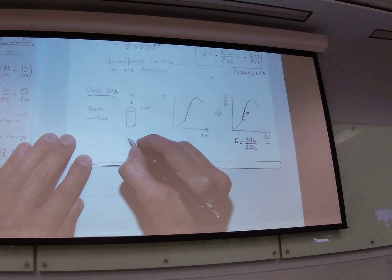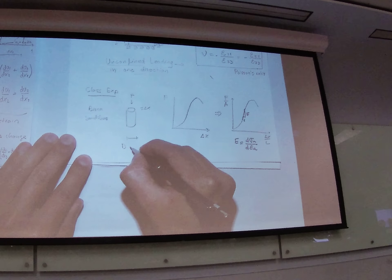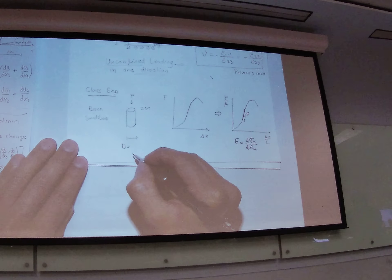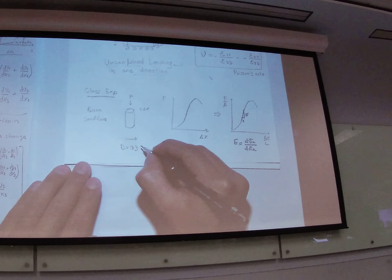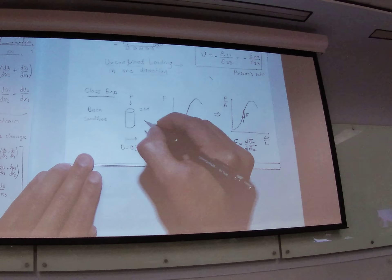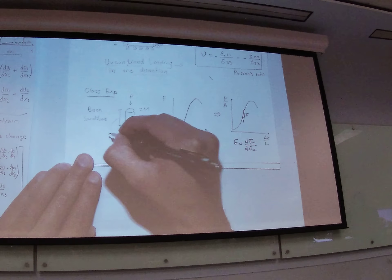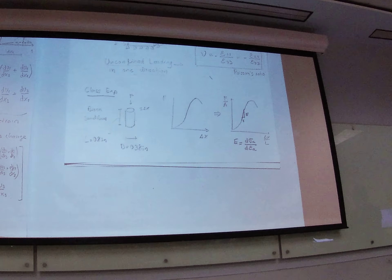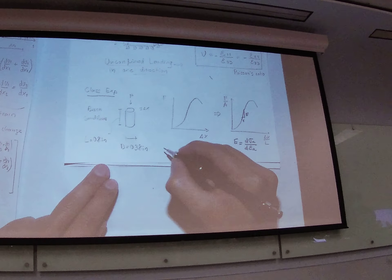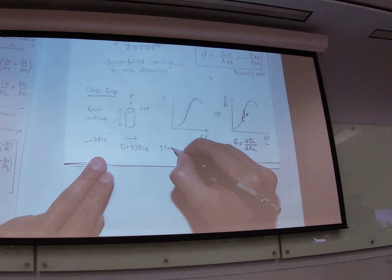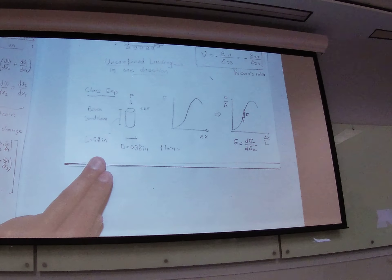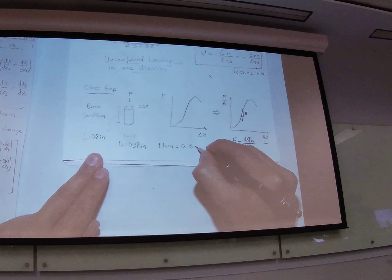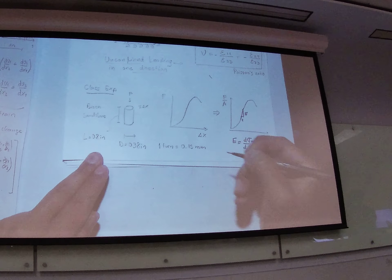As a reminder, we used a sample with a diameter of 0.38 inches. The length was 0.8 inches, and something that you need here is that the center of the crank is equal to 0.15 millimeters.